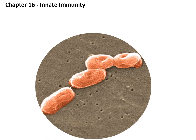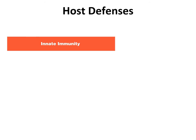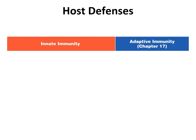This is part one for chapter 16 innate immunity. Your immune system is divided into two basic parts: your innate immunity, or innate immune response, which is also sometimes referred to as nonspecific, and your adaptive immune response, which is sometimes referred to as your specific immune response.